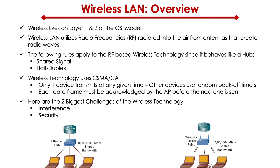The second big challenge of a wireless LAN network is security. Anybody who happens to be within range of the wireless access point can communicate — that includes good guys and bad guys. A lot of bad actors exploit this because shared airspace is no different than communicating in open public. If you go to a coffee shop and have a phone conversation that's supposed to be private, other people can listen. Similarly, on a wireless network that is publicly available, everybody connected has the ability to eavesdrop and listen into anyone else's conversation.